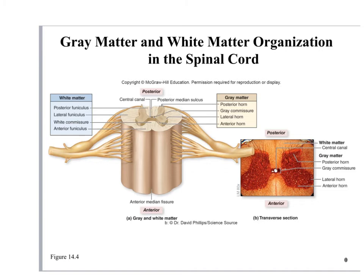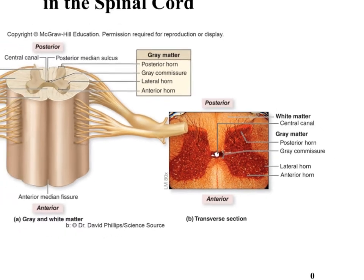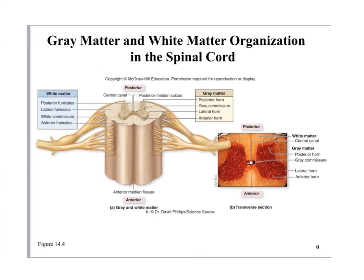We have posterior, lateral, and anterior funiculi in the white matter. There is also a gray commissure — a piece of gray matter extending around the central canal — that allows the left side to communicate with the right. The butterfly-shaped structure in histology sections shows all the gray matter, with white matter on the outside and the central canal on the inside.